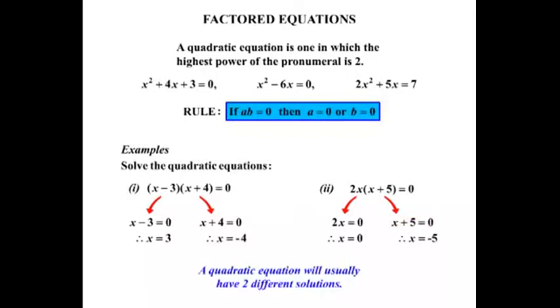Now, a quadratic equation will usually have two different solutions. So you can see that first equation there, the solutions were x equals 3 and x equals minus 4, two solutions. And then in our second equation, again, two different solutions. So that will often be the case.